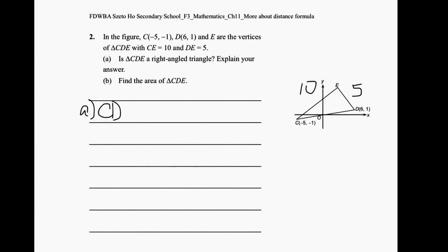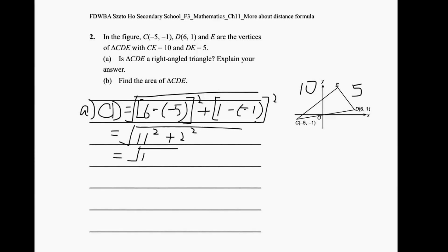So CD equals to, by using the distance formula, square root of 6 minus negative 5 all square plus 1 minus negative 1 all square. So this is how we can find the length of CD.